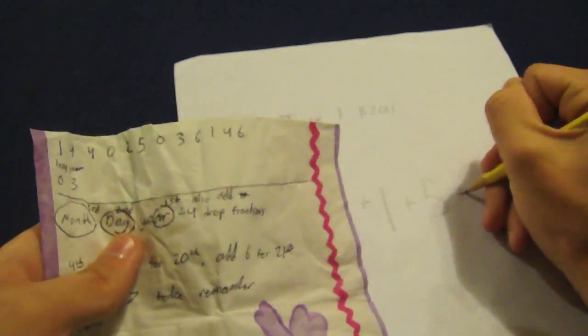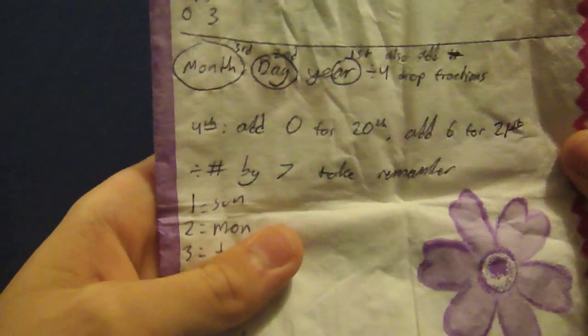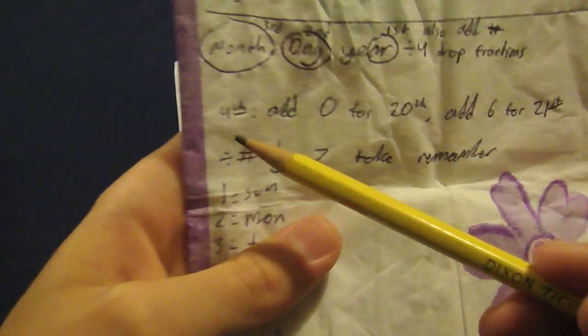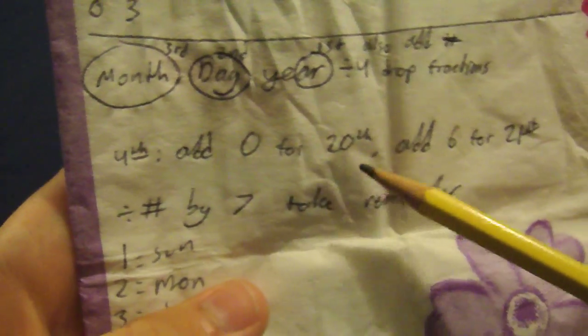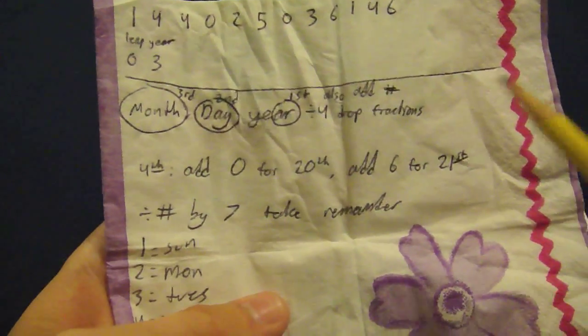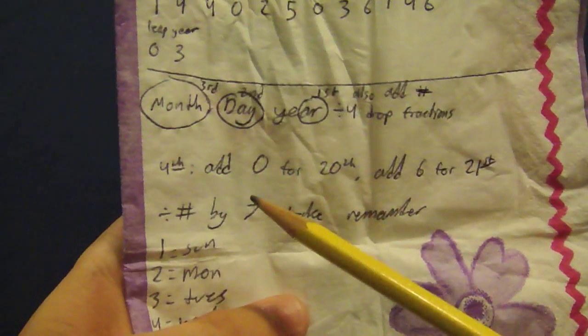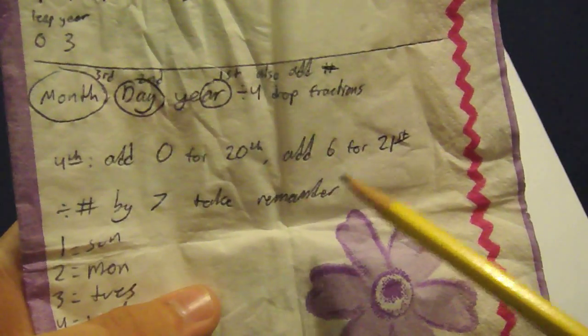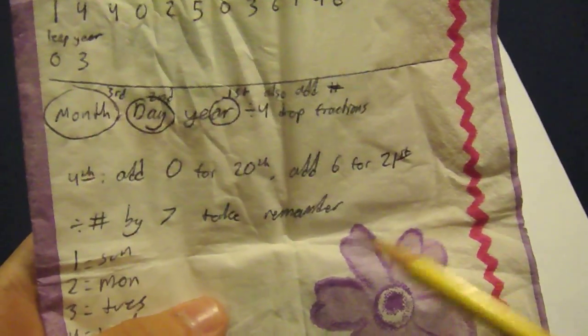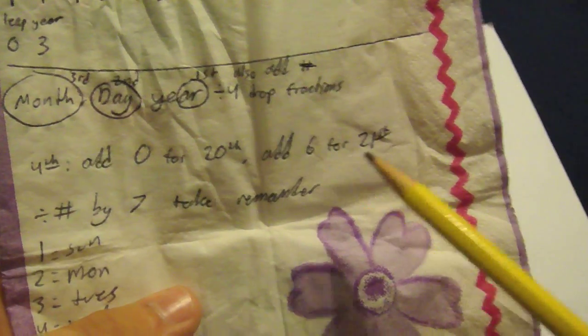And then you're going to add the last thing. You can see here 4th, it says add 0 for 20th and add 6 for 21st. Don't ask me why this is, but it just is. So if it's in the 20th century, you don't have to add anything, you just add 0. And then if it's in the 21st century, which is the 2000s, you're going to add a 6. So because it's 2011, you're going to add a 6.